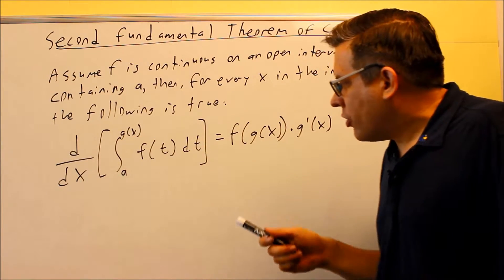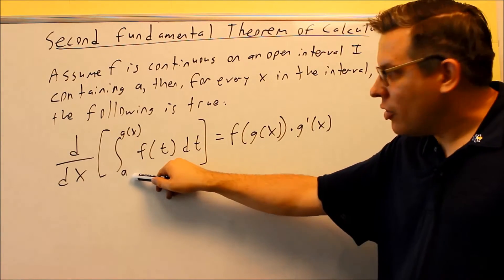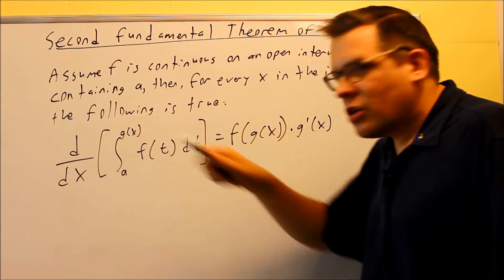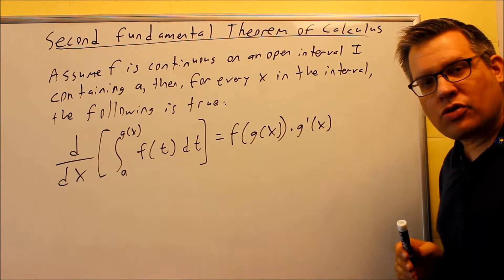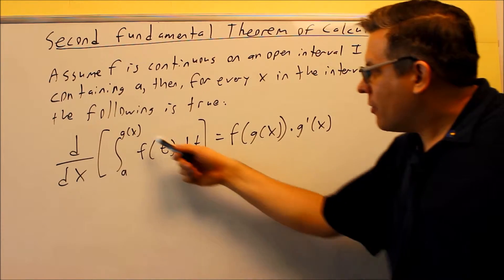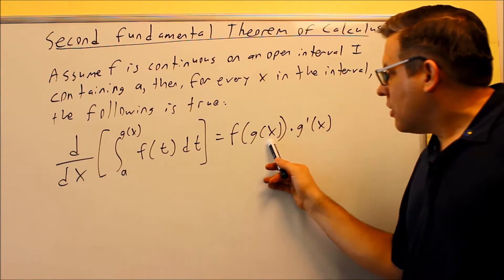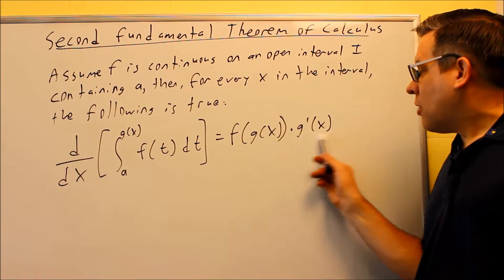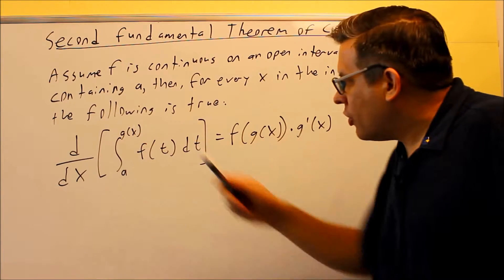You're taking the derivative of an integral here and you have a constant down below and you have some function written on top and here's the formula that you use in order to get the answer. You're going to put g of x in for t and then don't forget you have to also multiply it by the derivative of g.